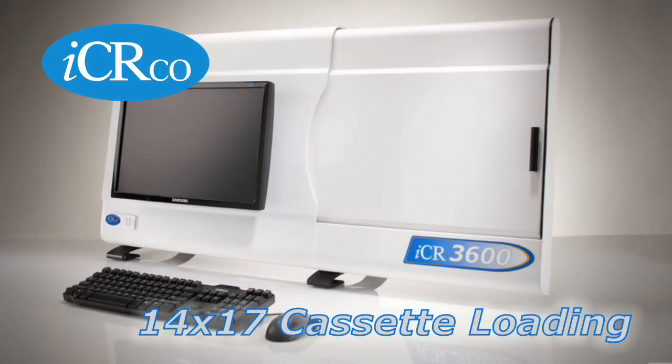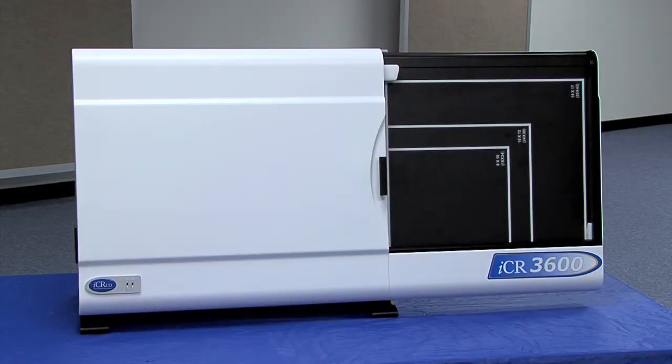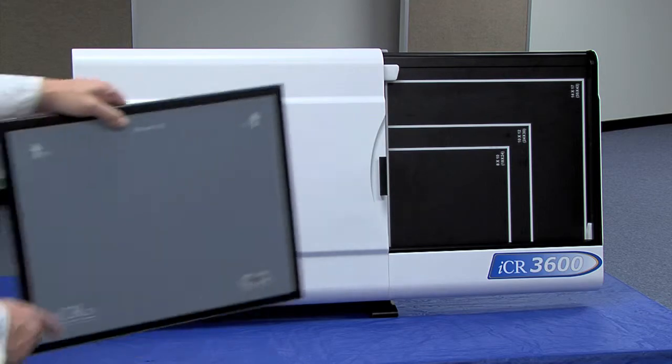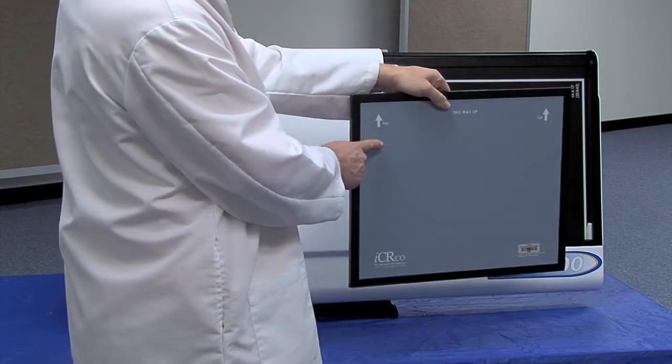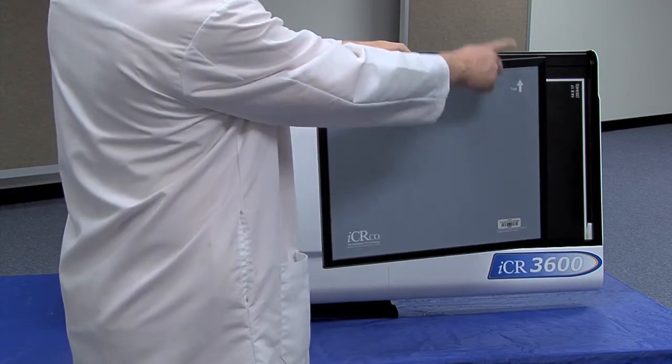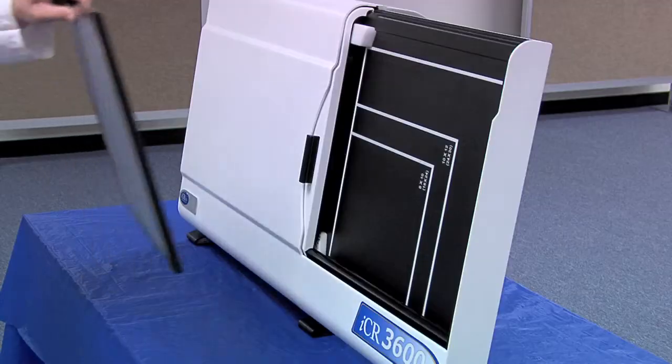Loading the 14x17 cassette in the CR3600 series. To load the 14x17 cassette in the CR3600 series scanner, make sure the arrows on the front of the cassette are facing out and pointed upwards as indicated.